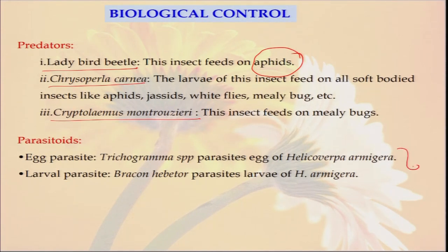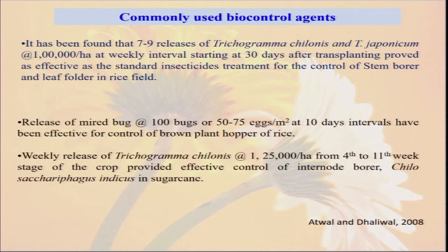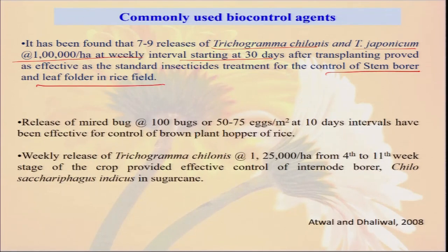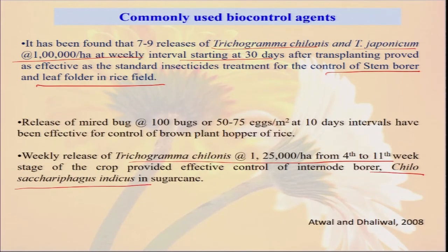We can use different types of parasitoids and predators — predators directly eat the insects, while parasitoids attack the eggs of other insect species. There are two types: egg parasitoids and larval parasitoids. Trichogramma chilonis and Trichogramma japonicum at the rate of 1 lakh per hectare, when applied in the field, reduce stem borer and leaf folder in the rice field. We can purchase these from the market, they are very cheap. Release of Trichogramma chilonis at 1.25 lakh per hectare also helps against a very important pest — the internode borer in sugarcane, Chilo sacchariphagus indicus.